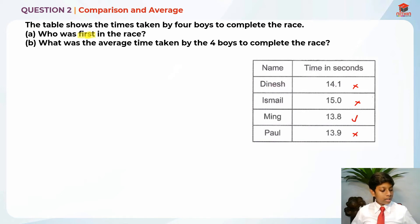13.9 is still greater than 13.8. 14.1 is still greater. So that is why Ming should be the answer. Ming is our answer for part A. I hope you understand that. Let me erase my working on the table.